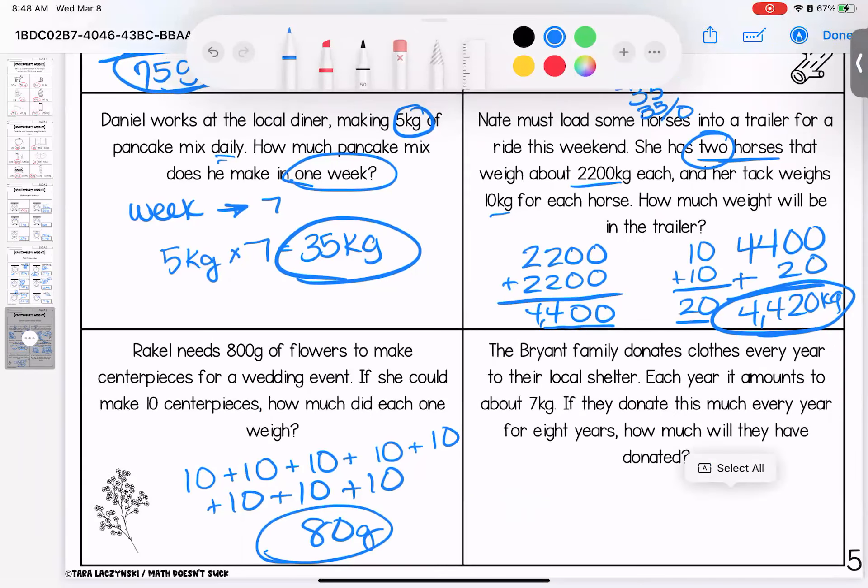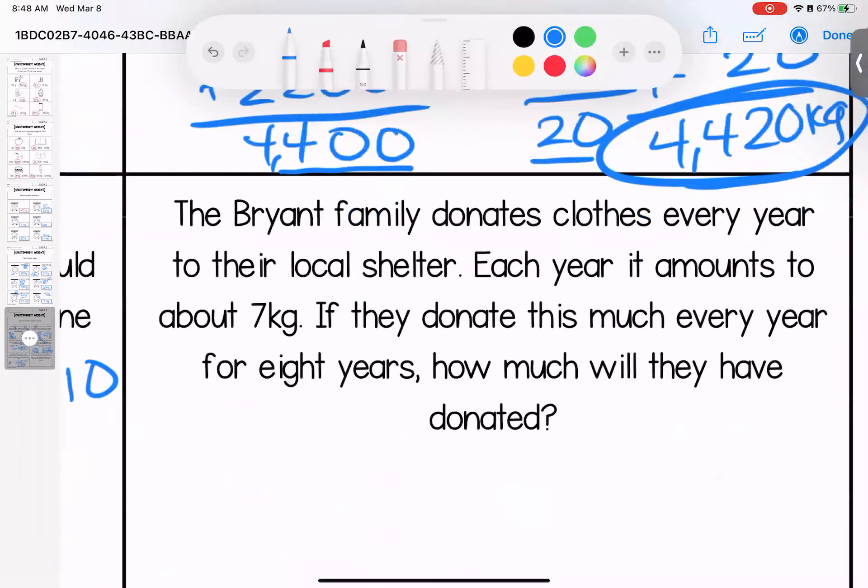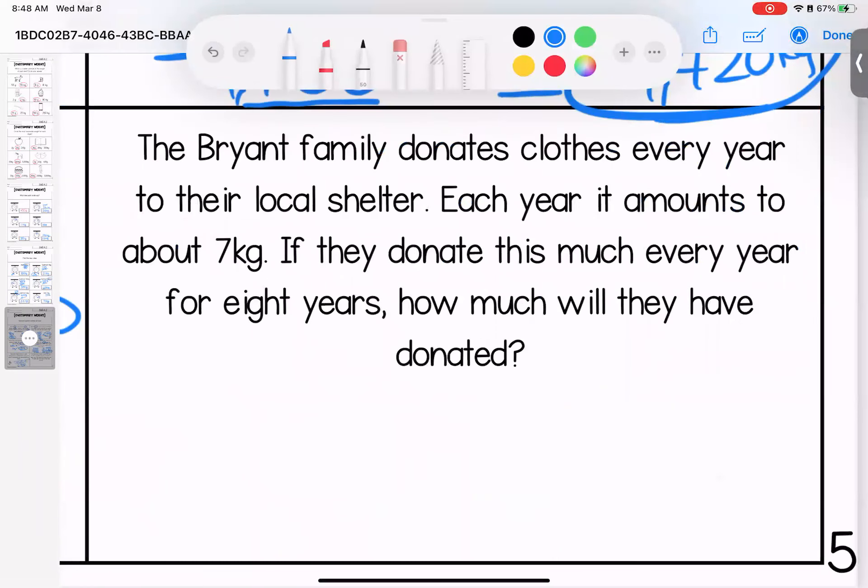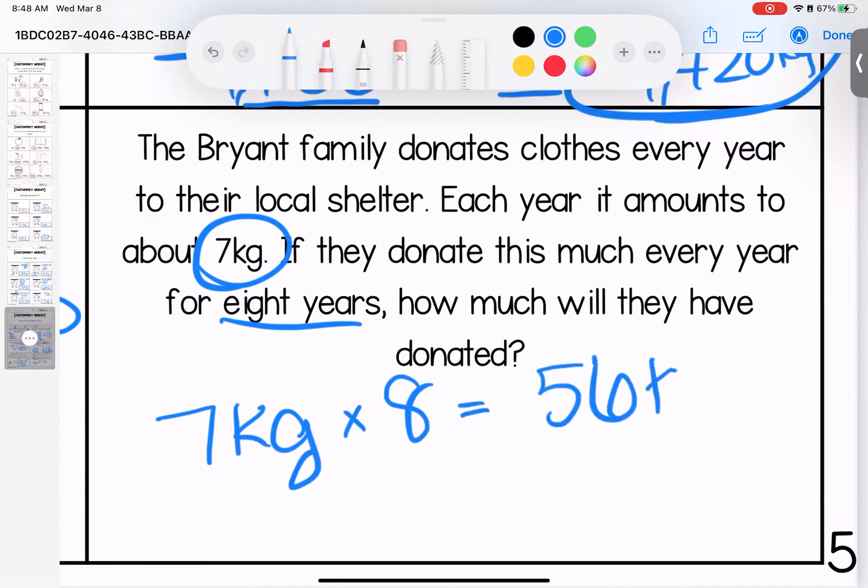One more. The Bryant family donates clothes every year to the local shelter. Each year it amounts to about seven kilograms. If they donate this much every year for eight years, how much will they have donated? They donate seven kilograms for eight years. Seven times eight is 56 kilograms. Any questions on these love bugs? As always, bring them with you to class. Have a great week.